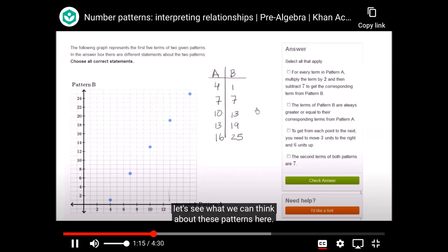Now, before even looking at these, let's see what we can think about these patterns here. It looks like pattern A starts at 4, and it increases by 3 every time. To go from one term to the next, you just have to add 3. What about for pattern B? Pattern B starts at 1, and every term here looks like you're adding 6. When pattern A increases by 3, pattern B increased by 6 from one term to the next.